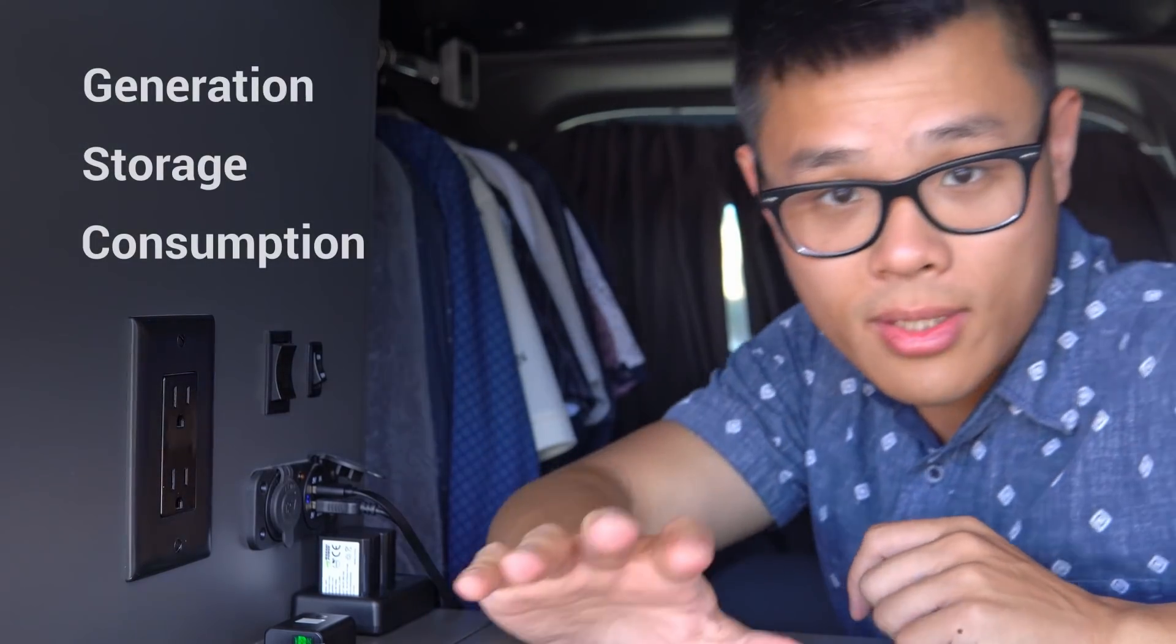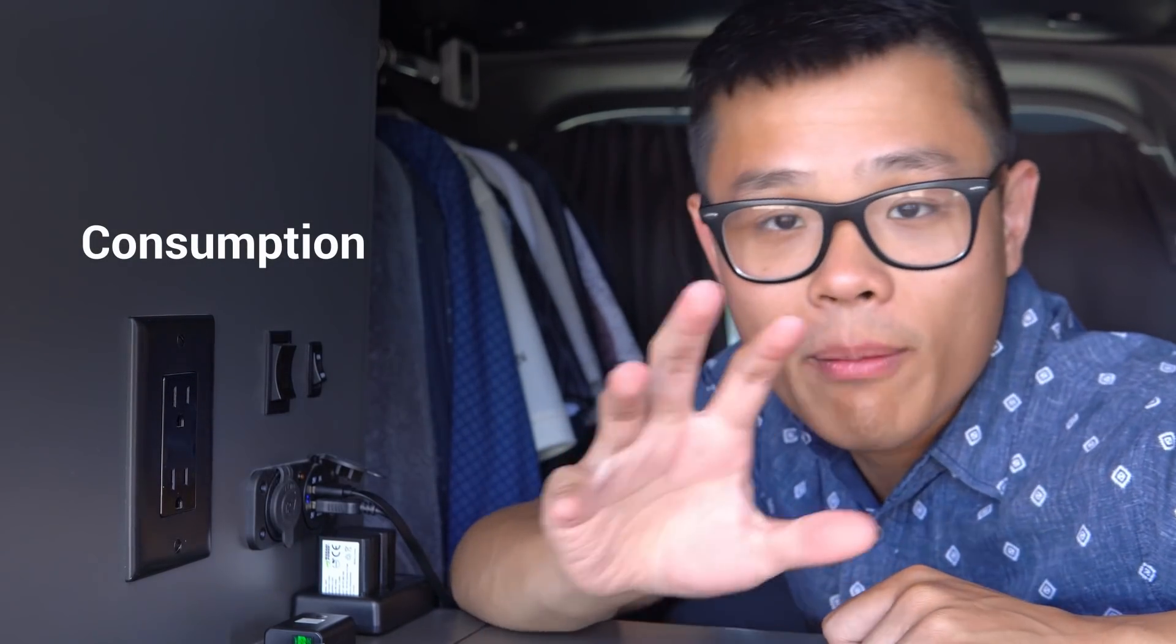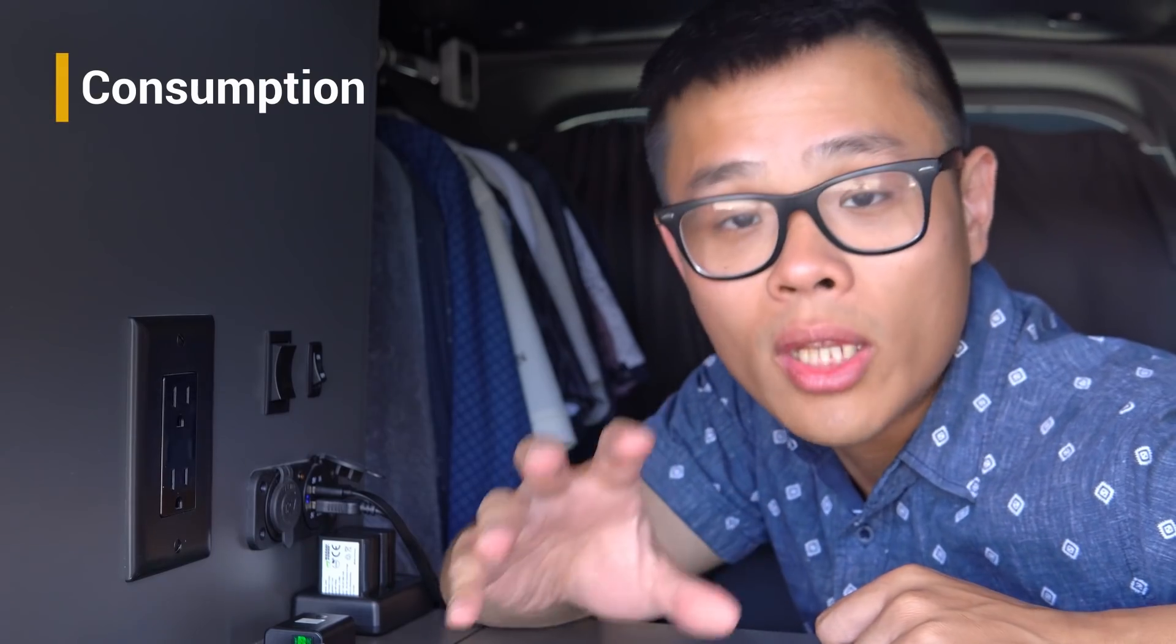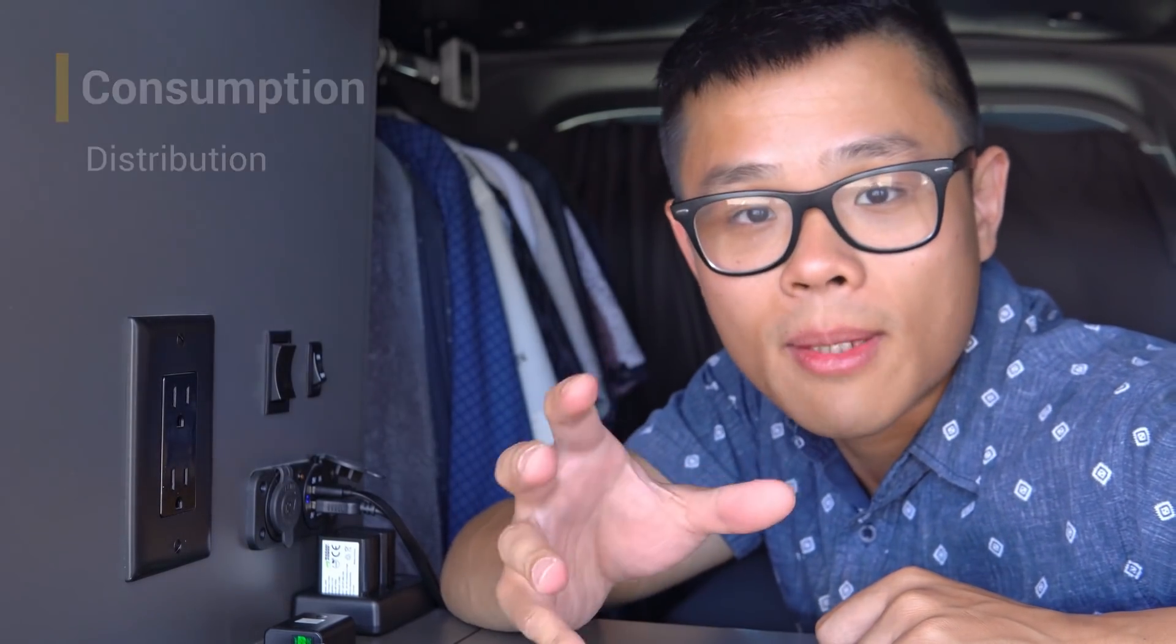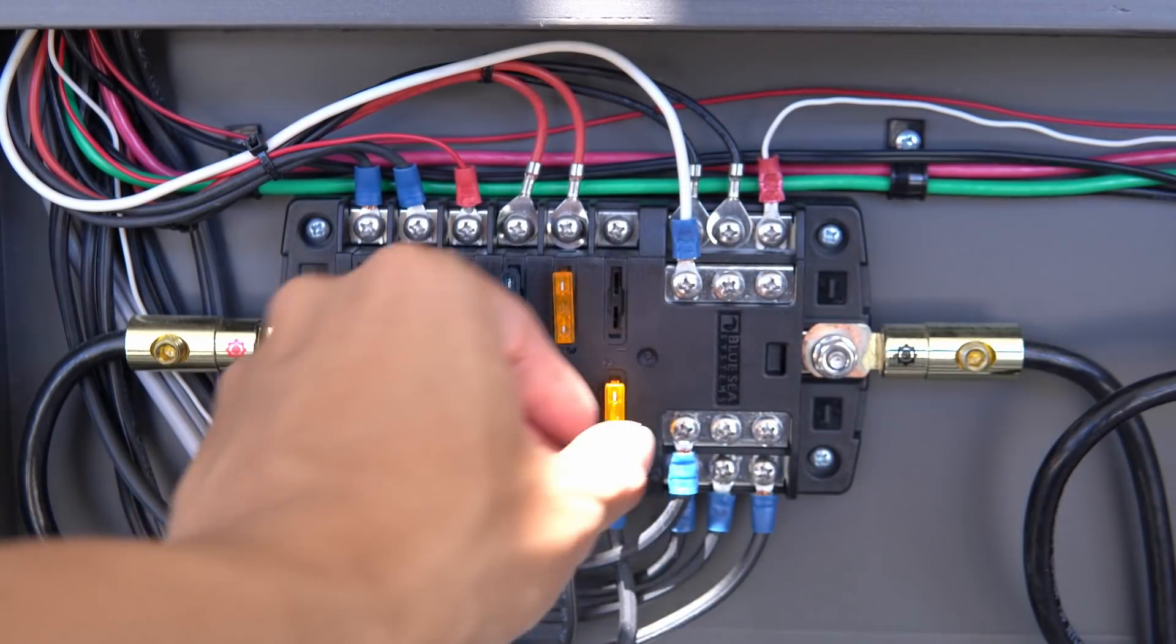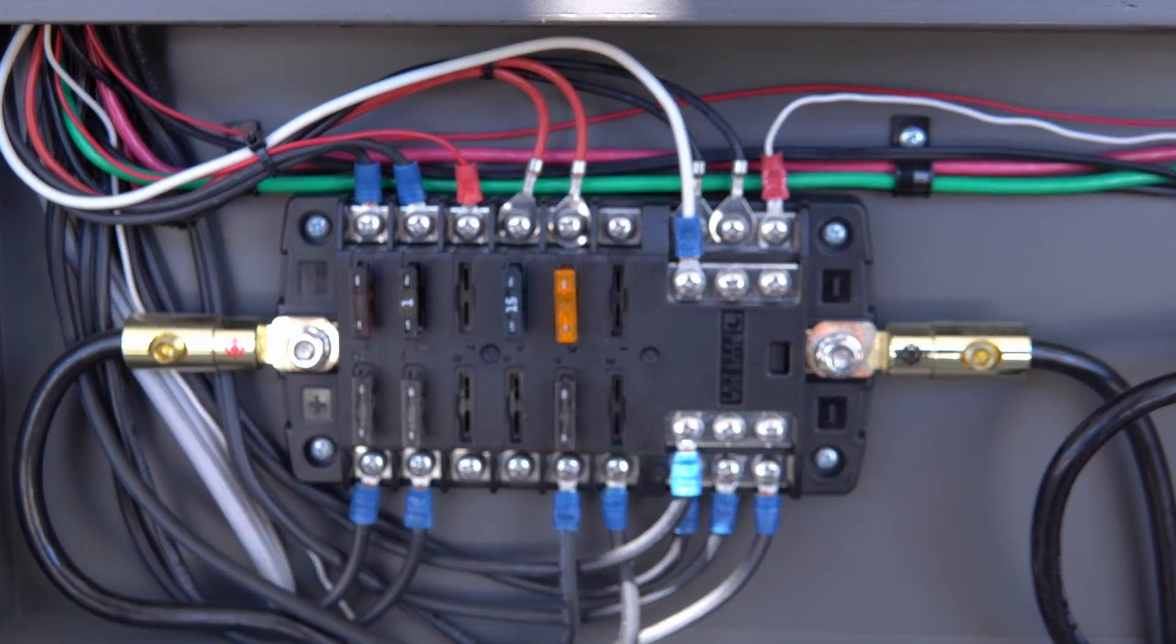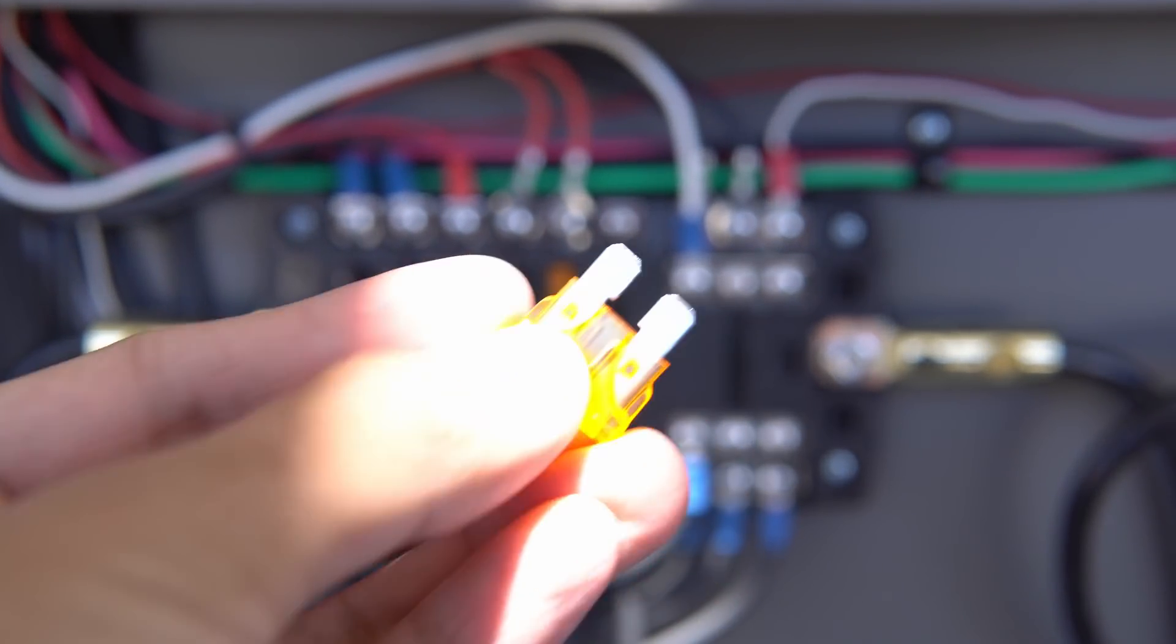The last and final part of our electrical system is power consumption. If you have multiple DC and AC devices, you need a way to distribute power to each one. For DC distribution, you can use a simple fuse block. This makes it easier to add multiple devices that all run on the same voltage and you can protect each device with blade fuses.